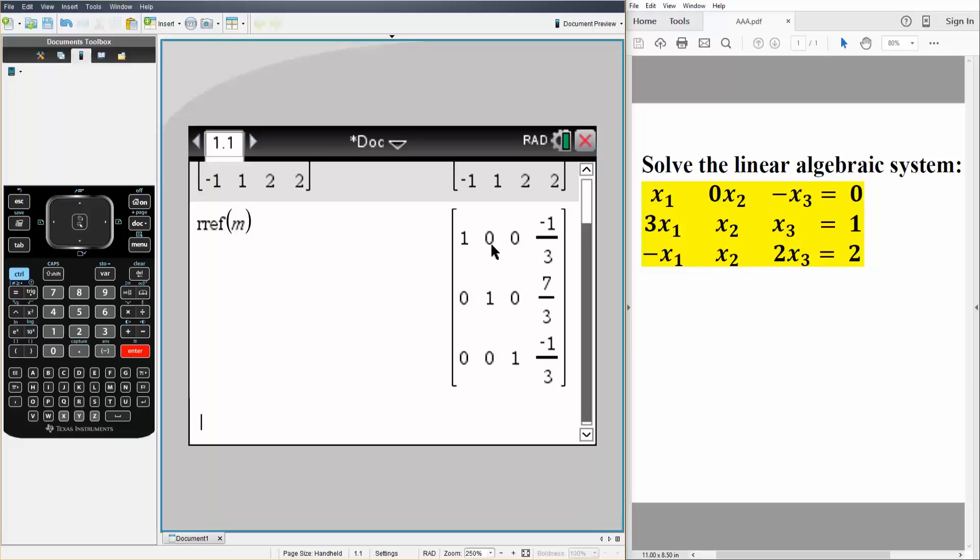And x3 is negative one-third. And there's no other possibility because for this, for example, x2 is zero and x3 is zero, so x1 must be negative one-third.